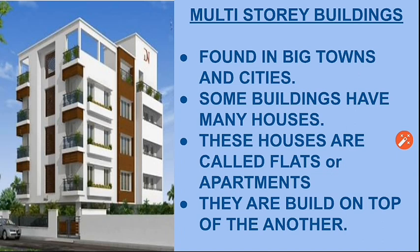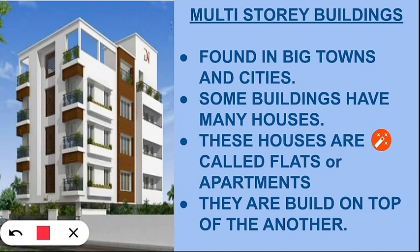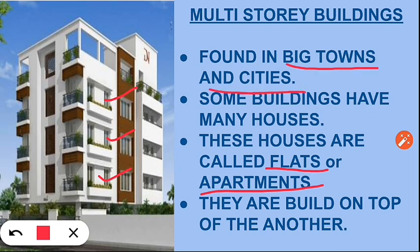Then comes a multi-story building. As you can see in the diagram, these buildings have many houses which are built on top of one another. These houses are either called flats or apartments. Multi-story buildings are also found in big towns and cities.